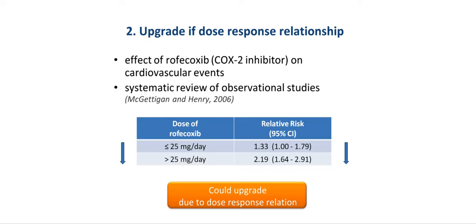Another example for dose-response relations comes from a systematic review of observational studies investigating the effect of cyclooxygenase-2 inhibitors, or COX-2 inhibitors, on cardiovascular events. That review found a relative risk with rofecoxib of 1.33 with doses of less than 25 mg per day, and a relative risk of 2.19 with doses of more than 25 mg per day.